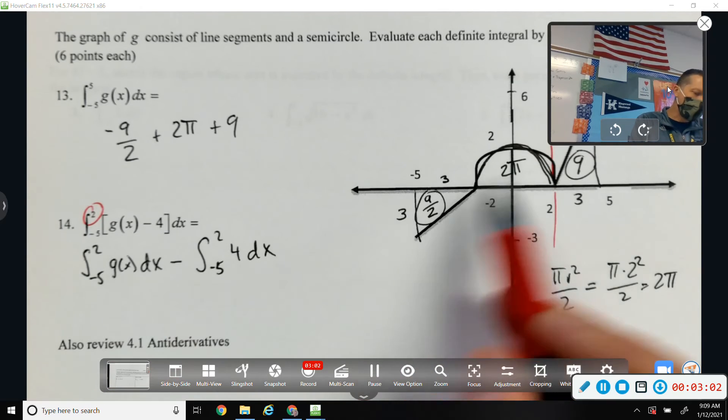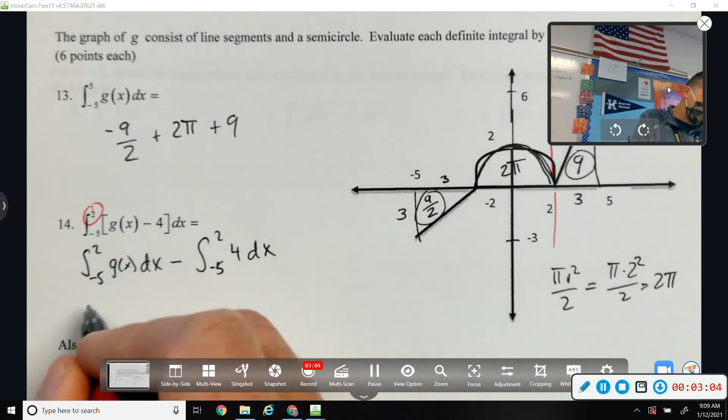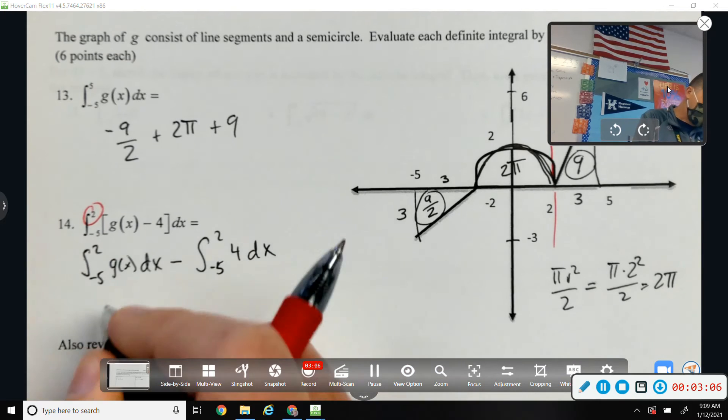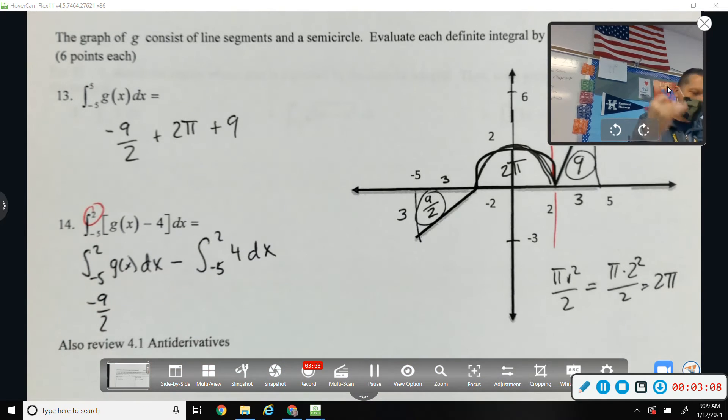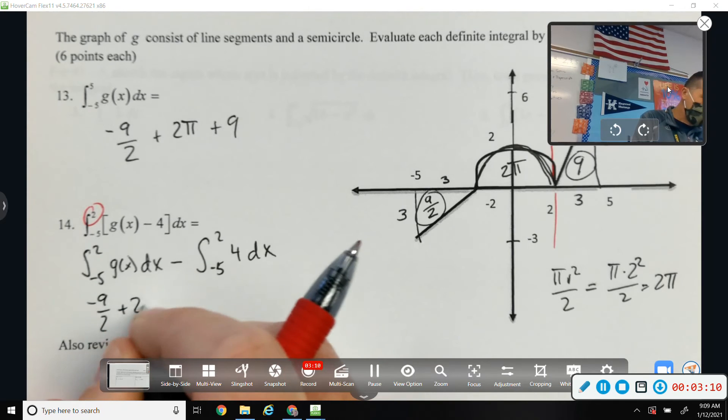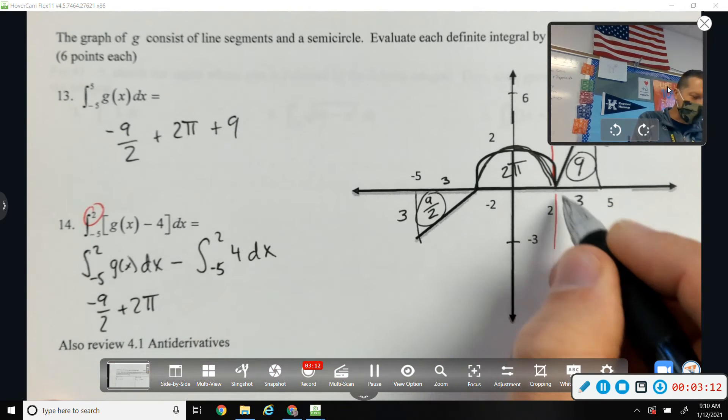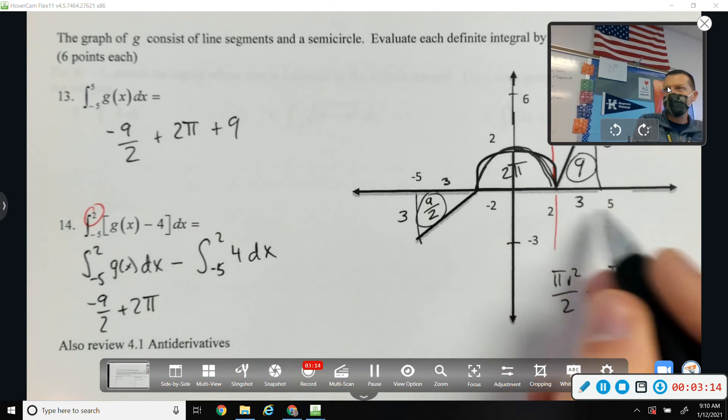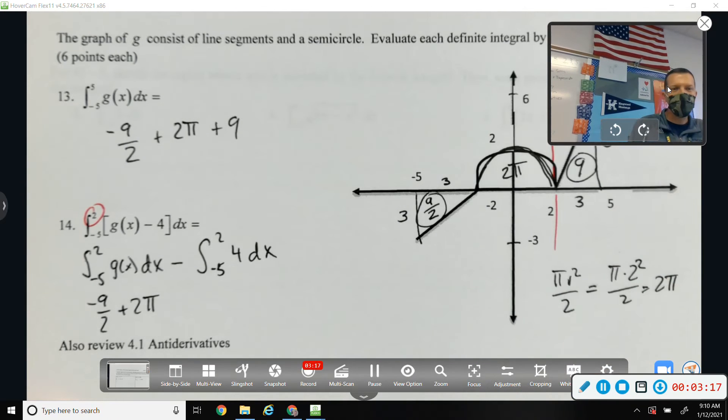So, from negative 5 to 2 of g of x, that would be negative 9 halves, again, because it's below, plus 2 pi. That gets us to 2, but we're stopping at 2 this time. We're not going to 5, so we're not going to include that last 9.